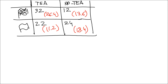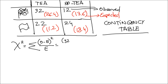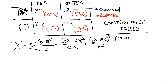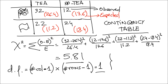Now you have the observed and the expected frequencies in a simple table. This is what is called the contingency table, and it's the basis for the test of independence. The degrees of freedom is the number of columns minus one, multiplied by the number of rows minus one. You can then calculate the chi-square with the summation of the observed minus the expected frequencies, squared, divided by the expected — you do this for the four cells — giving you a chi-square value of 5.81. With one degree of freedom, you can calculate the p-value.